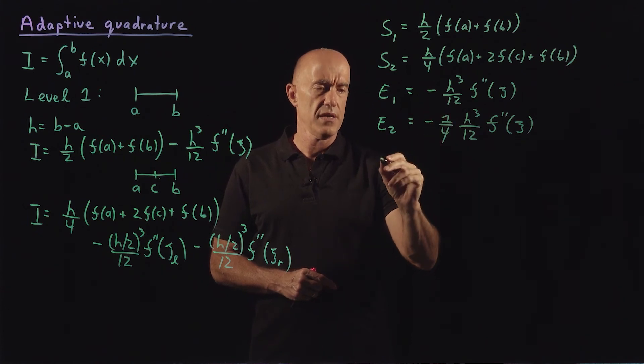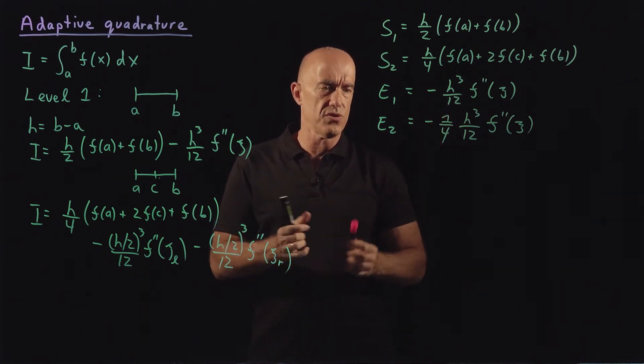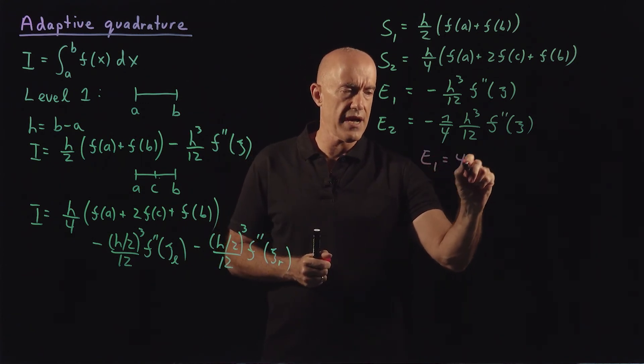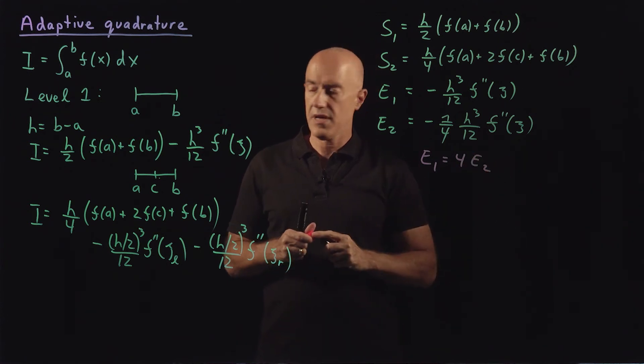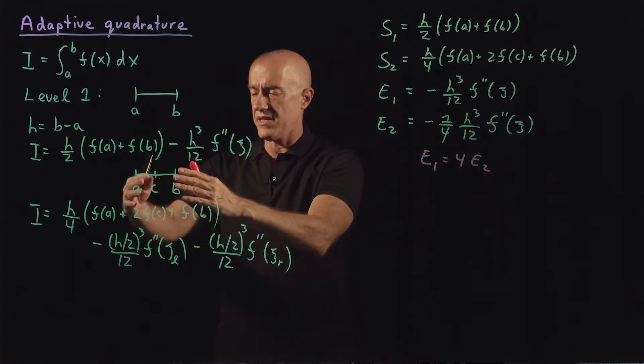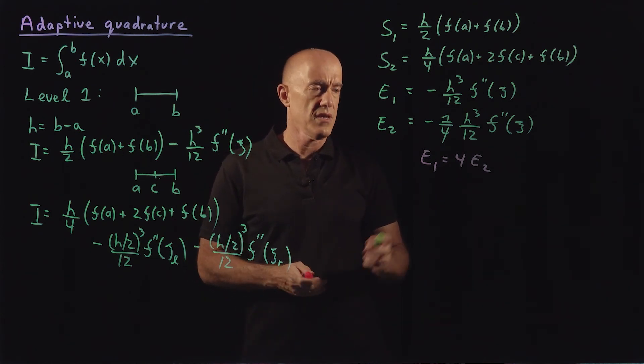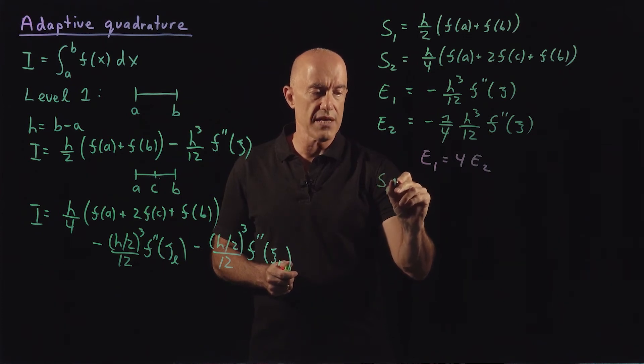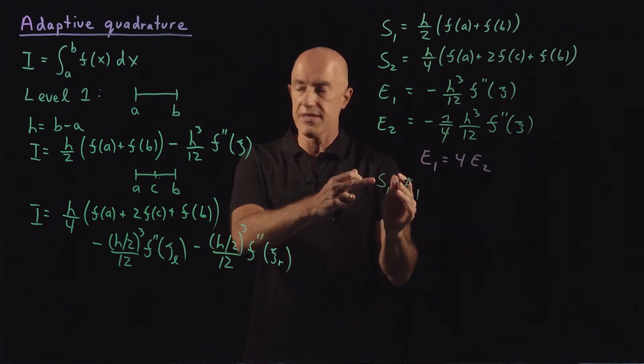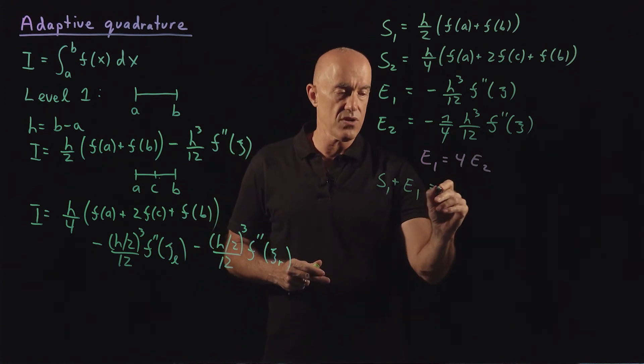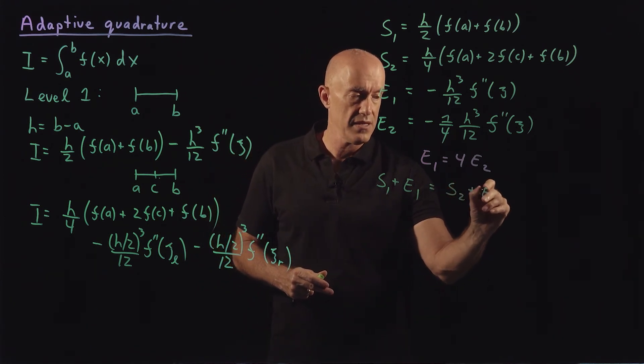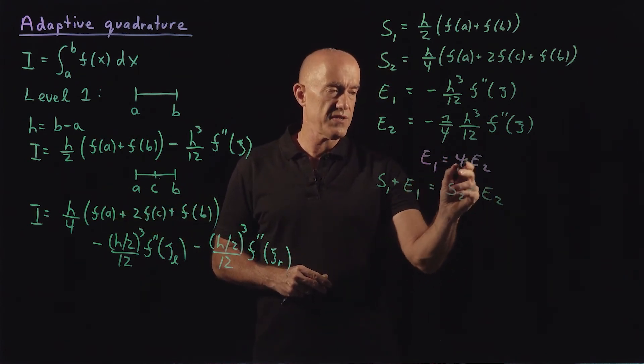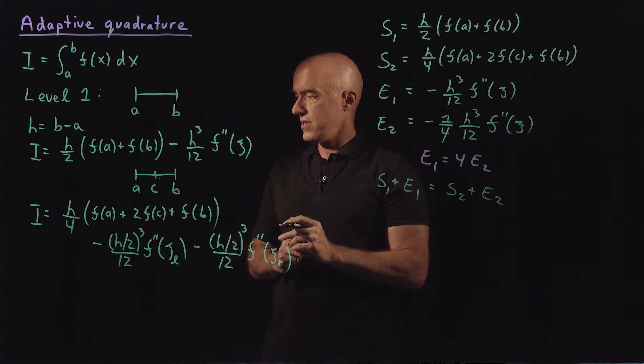So the error here is one quarter of e1. So e1 is 4 times e2. E1 here is 4 times e2. As you would expect, the finer the interval, the smaller the error is. So we have this relationship then that s1 plus e1, this is actually the integral, is equal to s2 plus e2. That's also the integral. And that e1 is 4 times e2.